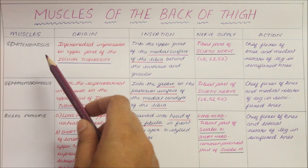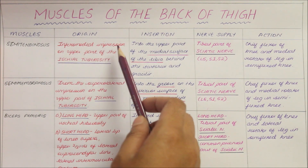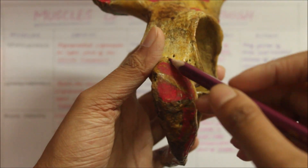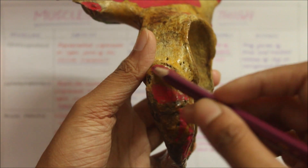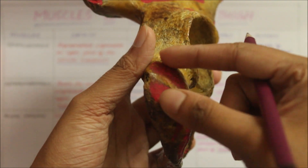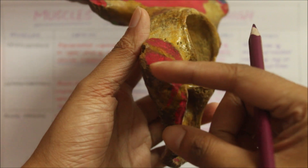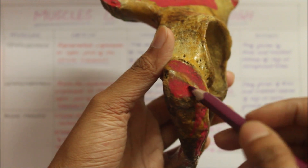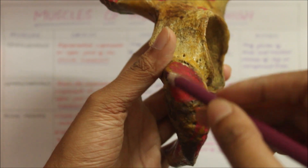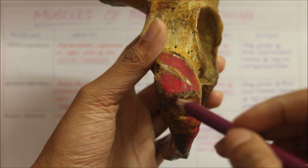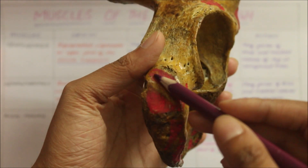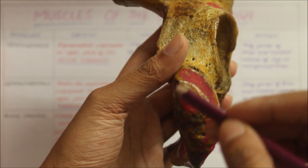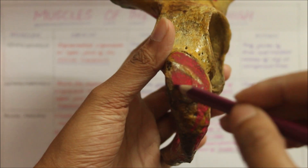Beginning with the semitendinosus muscle, it originates from the inferomedial impression on the upper part of the ischial tuberosity. This is the right hip bone. The area here is called the ischial tuberosity — this is the upper part and this is the lower part. The semitendinosus originates from the inferomedial impression on the upper part of the ischial tuberosity, on the medial aspect, right here.